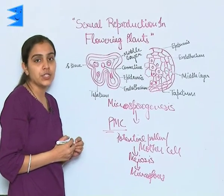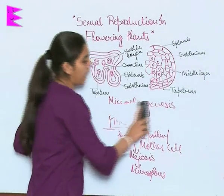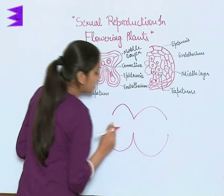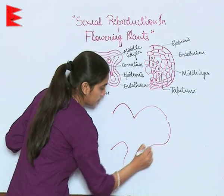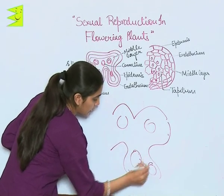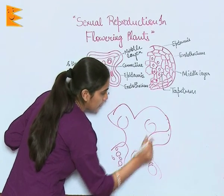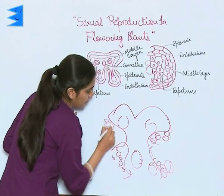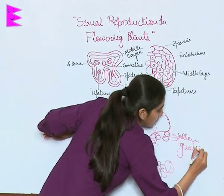Once favorable conditions are present, or as the anther matures or dehydrates, the microspores burst and release pollen grains.